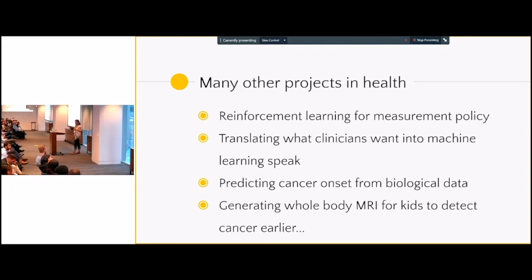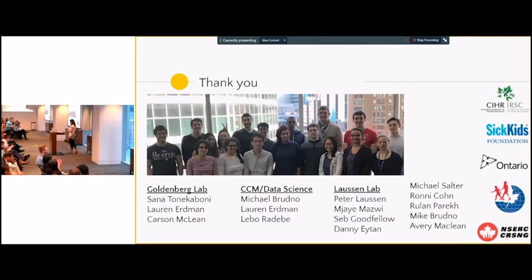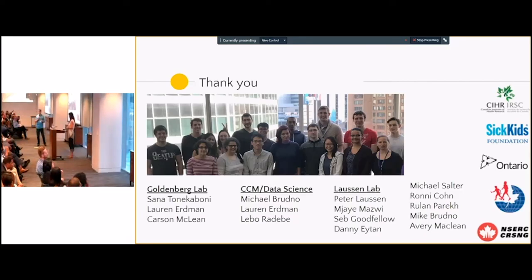I work on a lot of different things. I gave examples of one or two applications, but we work on reinforcement learning for deciding which measurements to take in critical care, translating clinician knowledge to machine learning, predicting cancer onset from cellular data, generating whole-body MRIs using GANs, and more. With that, I think I've said enough. I want to thank my amazing lab — they've done all this work — and my funders and the institution. Thank you.